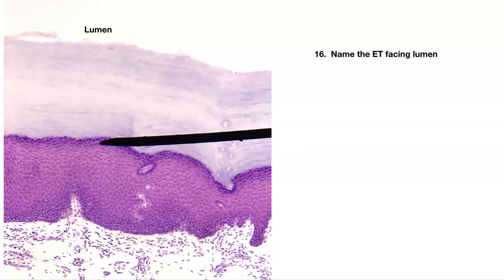Number sixteen. Name the epithelial tissue facing the lumen. Don't pay attention to the pointer — just look at the epithelial tissue and make sure you give me the specific one shown here.